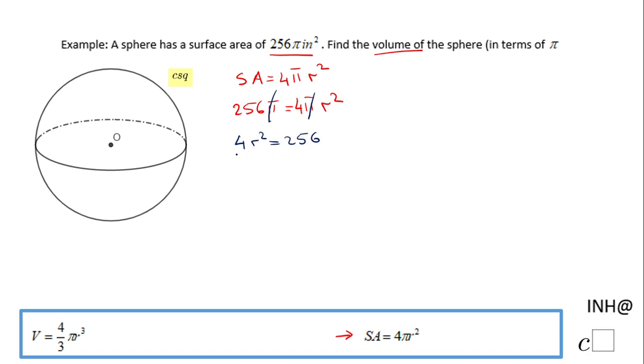In order to find r, we can take the square root, or find a number that raised to the second power is 64, and that will be 8. The radius of this sphere will be 8.